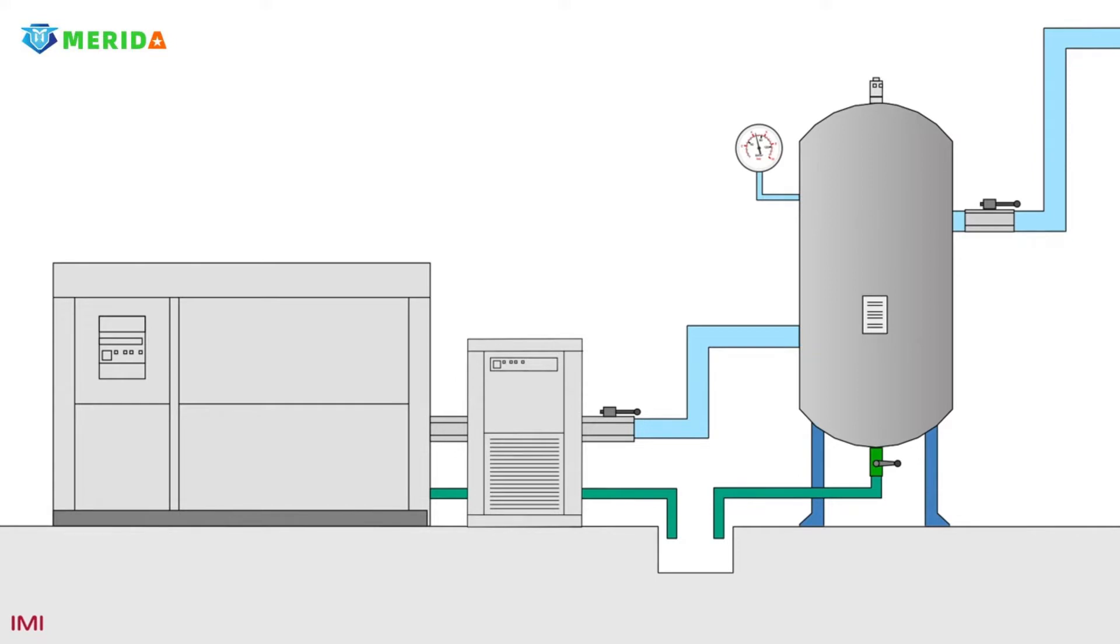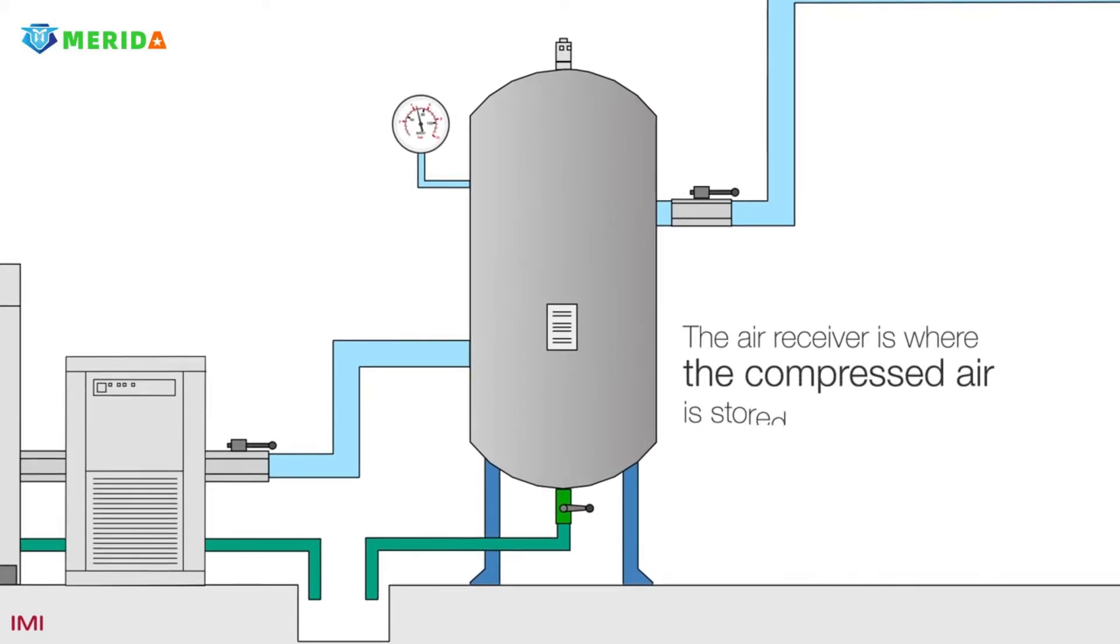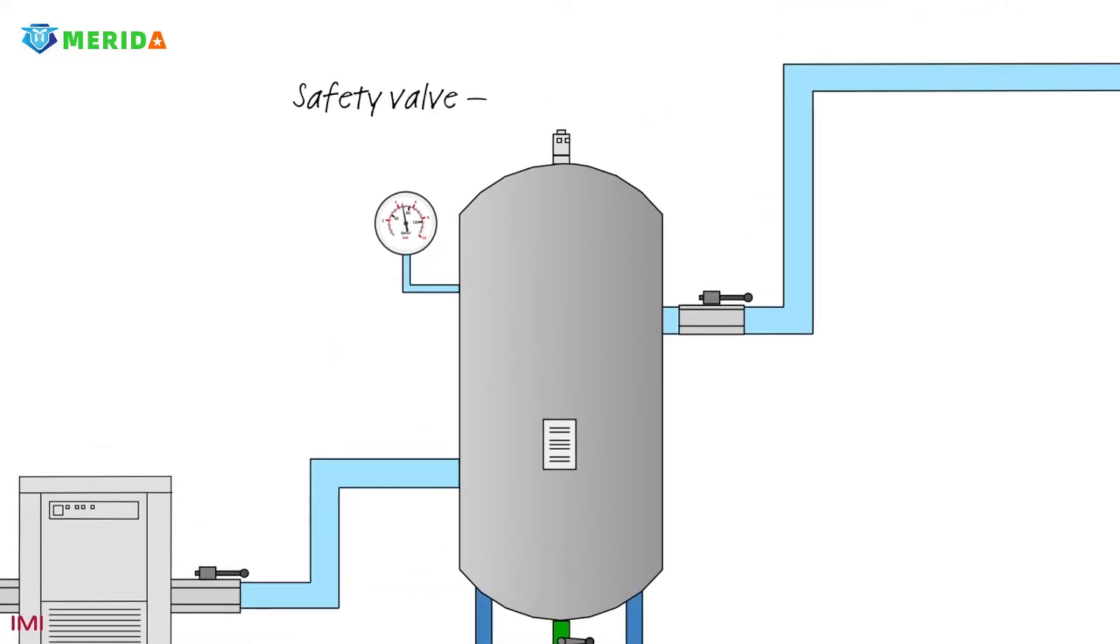The air receiver is where the compressed air is stored. Think of it as a battery - it's where the energy is stored. The safety valve will release air if the pressure rises above the set pressure, for example 10 bar.